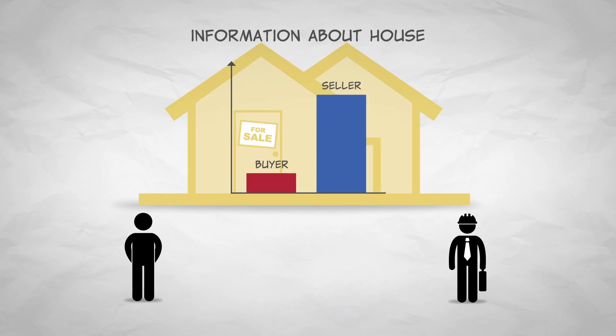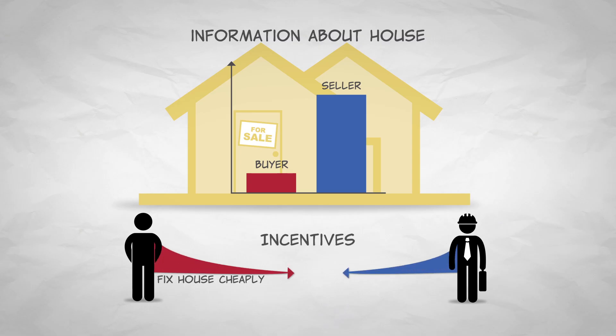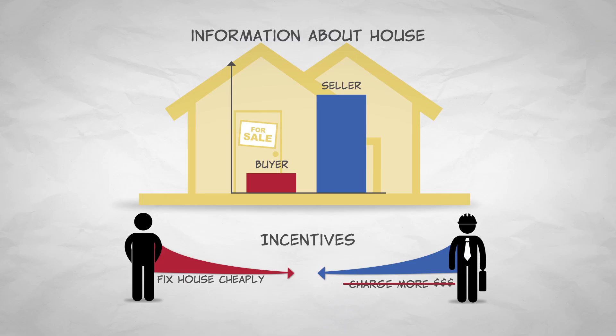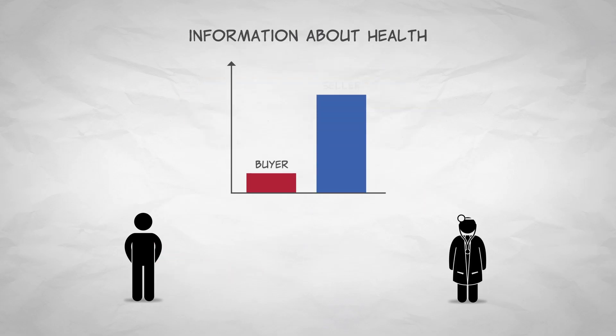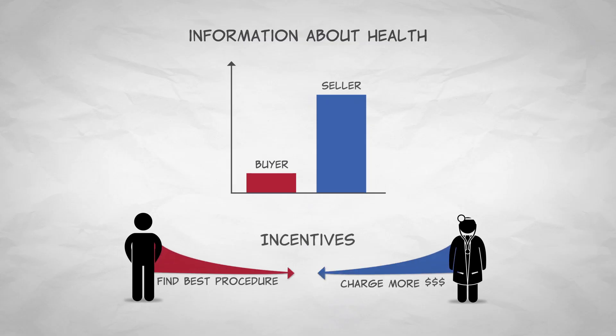When you buy a house, you typically get a home inspector to check out the house and identify potential problems. By law, in many states, these home inspectors cannot also sell services to fix any problems they've identified. This changes their incentives — no longer do they have the incentive to overstate potential problems to inflate the bill. Similarly, when you go to a doctor for a second opinion, that doctor is simply diagnosing the problem, but not doing the actual treatment. Just like with the home inspector, this eliminates the incentive to run up the bill.